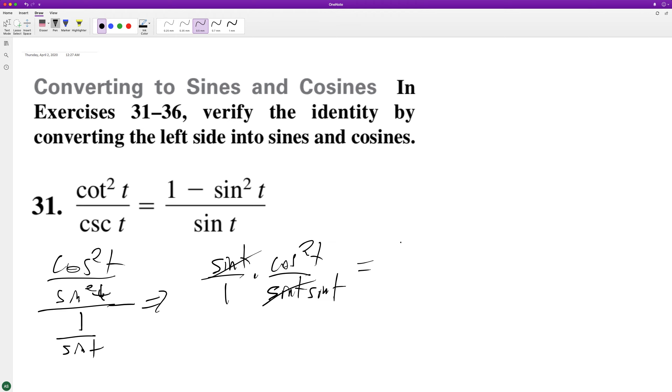So we're left with—we can convert cosine squared t into 1 minus sine squared t over sine t, and that's it. I hope this helped you out.